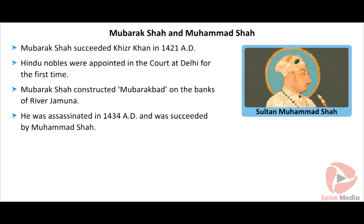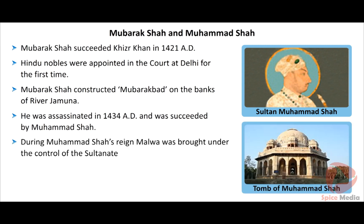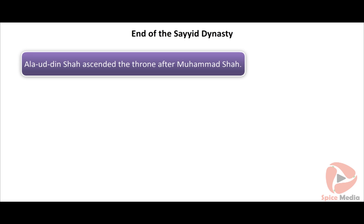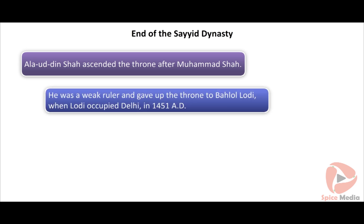Mubarak Shah succeeded Khizr Khan in 1421 AD and ruled for 13 years. During his reign, the Kokas and local chiefs of the Doab region were brought under the control of the Sultanate. Hindu nobles were appointed in the court at Delhi for the first time. Mubarak Shah constructed Mubarakbad on the banks of Jamuna. He was assassinated in 1434 AD and was succeeded by Muhammad Shah, his nephew.